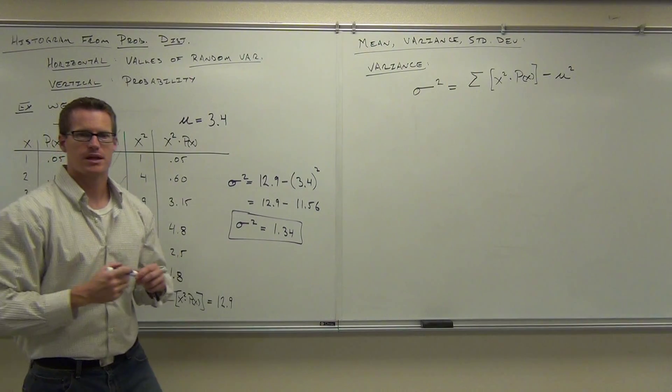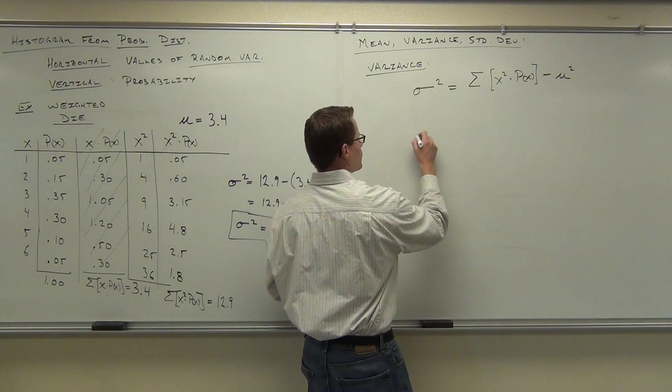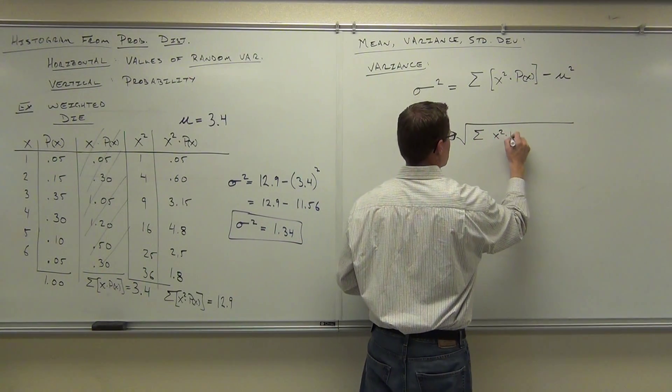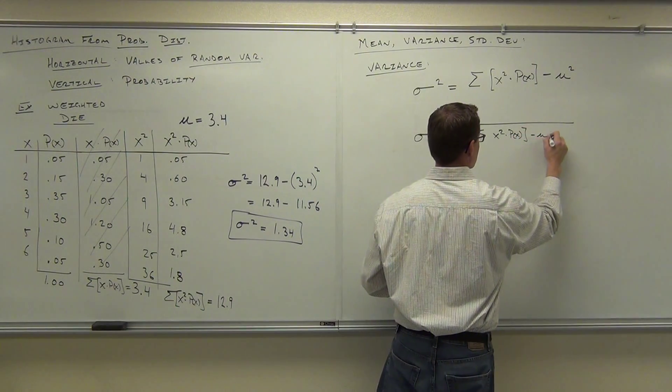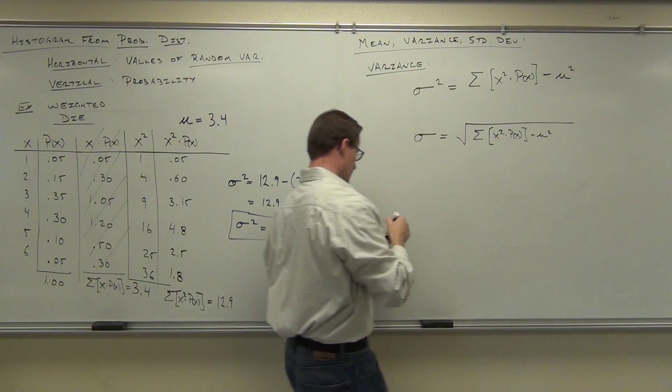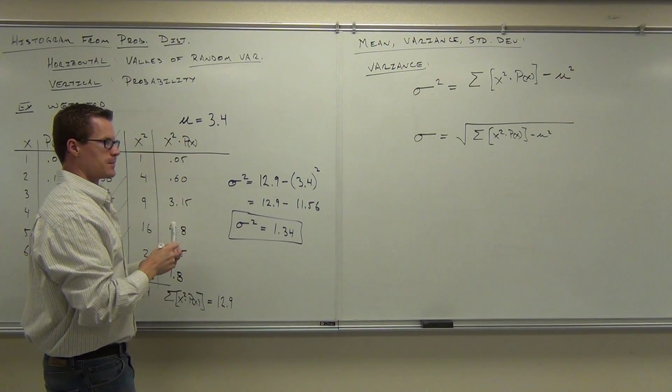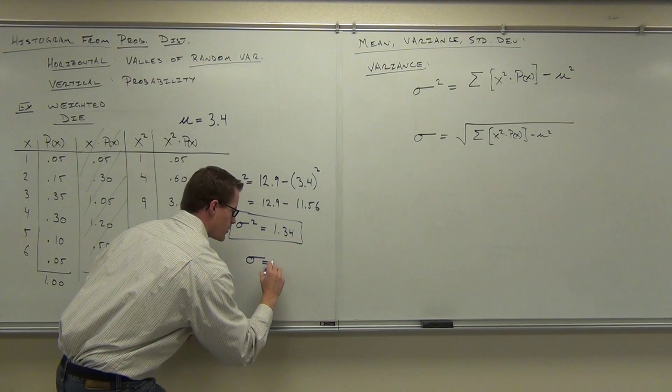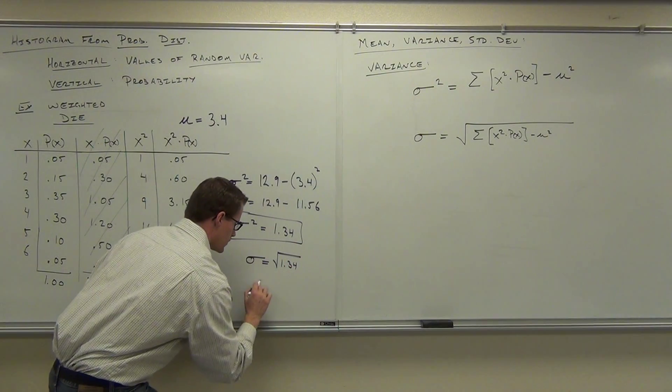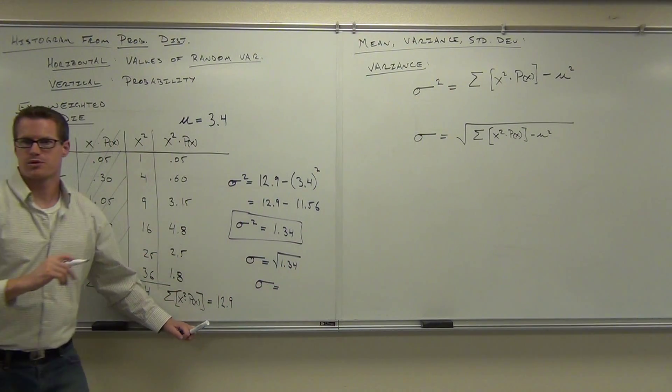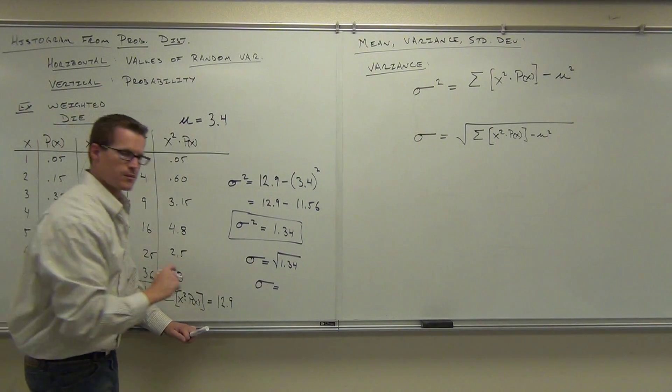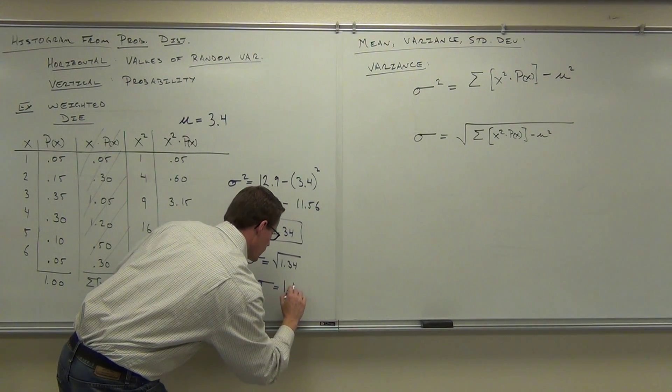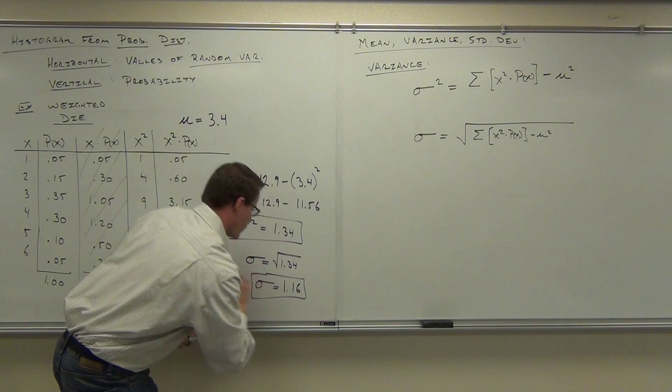We're going to find out next time that in order to find the standard deviation, we just take a square root of the whole thing. If I square root this one. That's right. So can you take the square root of 1.34 for me? Square root of 1.34? 1.1575. 1.16.